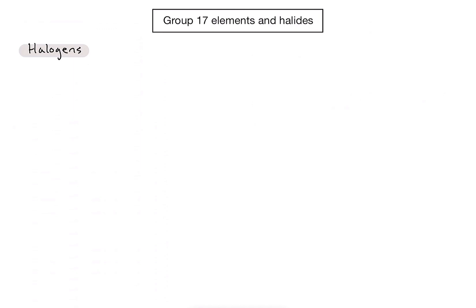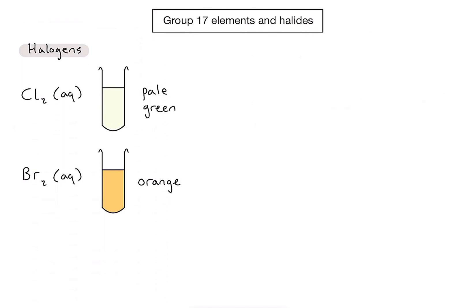The first one would be aqueous chlorine or chlorine solution, and you can see there it's got a nice pale green colour. Secondly we're going to have a look at bromine solution which has a kind of yellowy orange colour. And finally we're going to look at iodine solution which has a kind of darker brown colour.